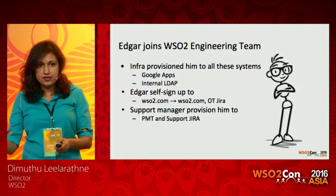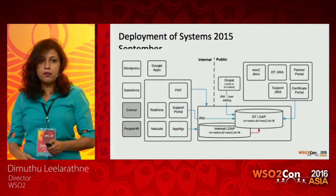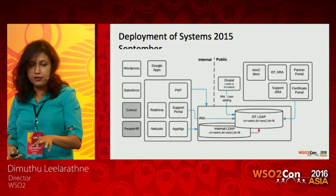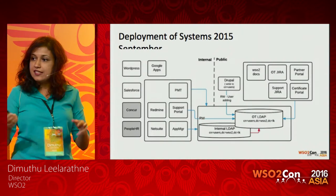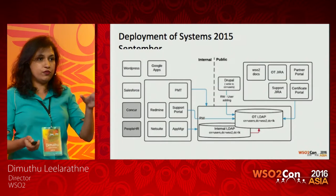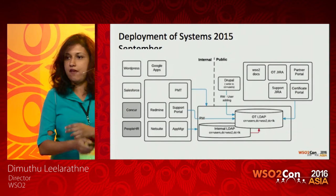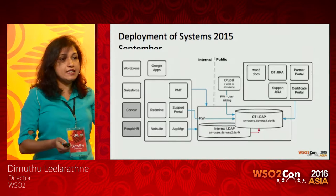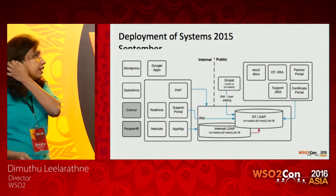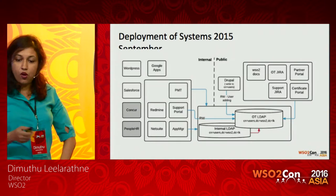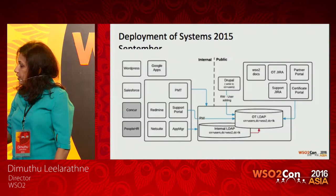Let's look at the deployment — this is the Q3 deployment from 2015. We had one big LDAP with a single OU for all users — employees, open source community, and customers. Employees are maintained in a separate internal LDAP and synced into the external LDAP periodically. All internal systems are connected to the internal LDAP so that employees use the same password across those systems.